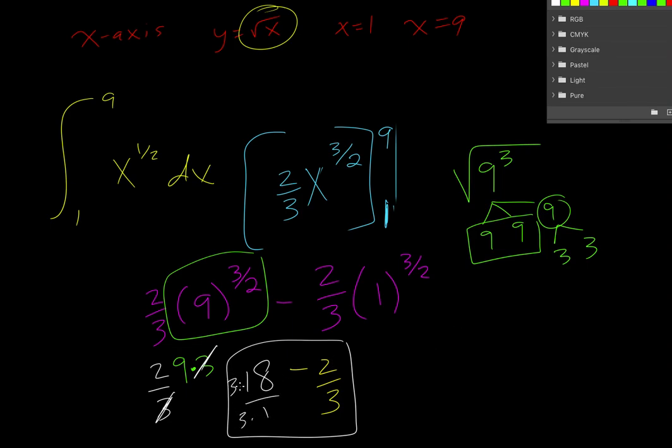Let's see what is 3 times 18, 18, 18, 36, 54. Okay and so we end up with 52 thirds.